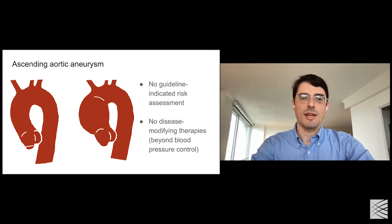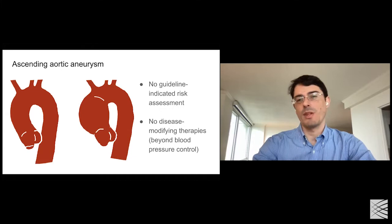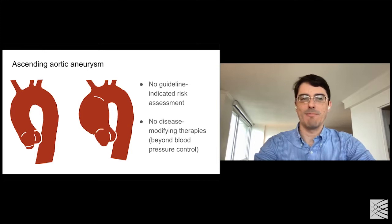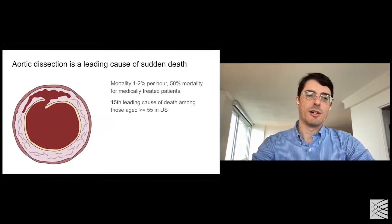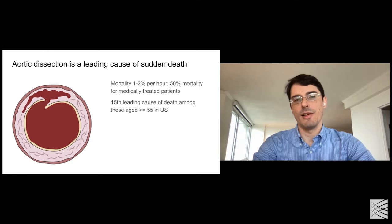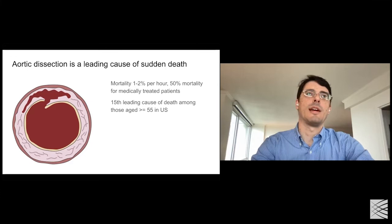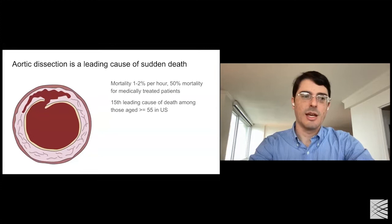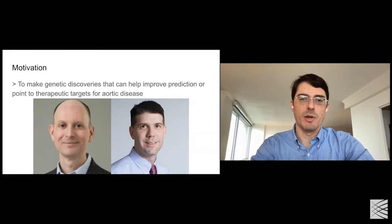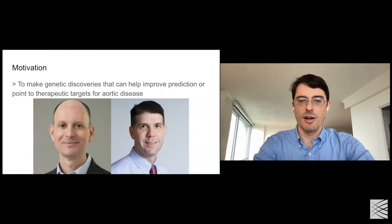Ascending aortic aneurysm is an enlargement of the aorta, which is the largest blood vessel in the body and brings blood from the heart to the rest of the body. Unlike the abdominal aorta, we don't have screening guidelines for who should have their ascending aorta imaged, so we don't pick this up until people develop symptoms. The symptom of an enlarged aorta is typically aortic dissection — a tear in the wall of the aorta — which is a highly painful, morbid, and mortal condition and the 15th leading cause of death in older adults. Identifying these people early and finding treatments would be very appealing.